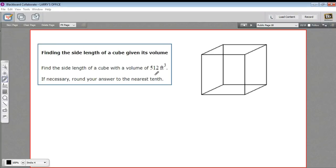In this problem we're being asked to find the side length of a cube given its volume. So we know the volume of this cube and we want to find the length of a side. In a cube all the sides are the same length, so if this side is X, then this side is X and this side is X.